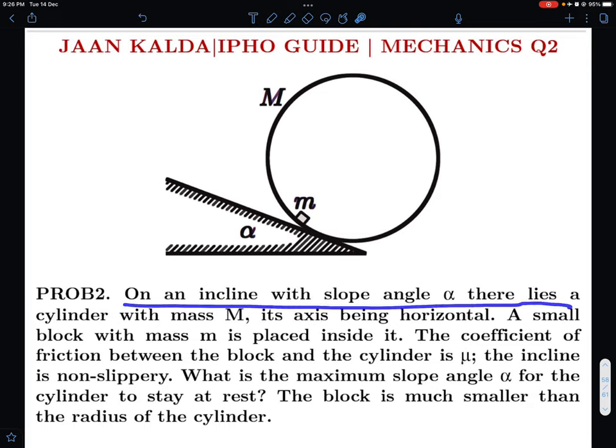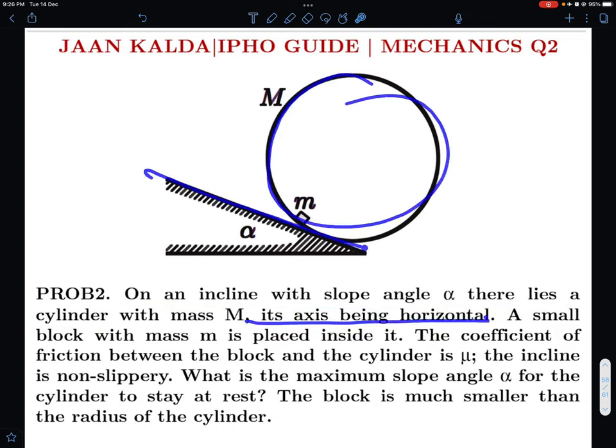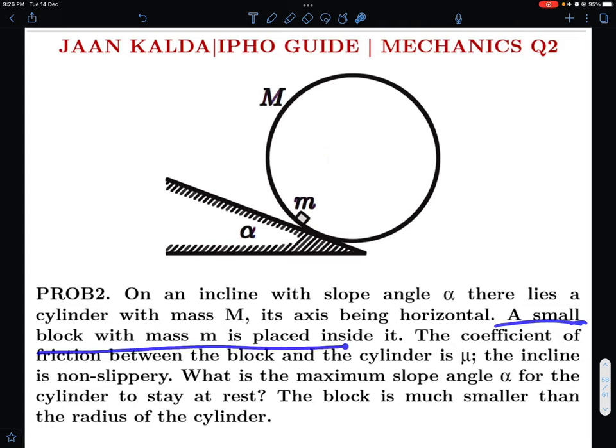On an incline with slope angle alpha, there lies a cylinder with mass M, its axis being horizontal. So this is the cylinder and here's the incline with angle alpha and the axis of the cylinder is horizontal. A small block with mass small m is placed inside it. The coefficient of friction between the block and the cylinder is mu.